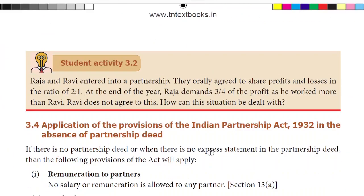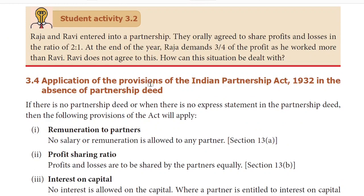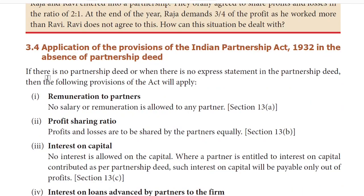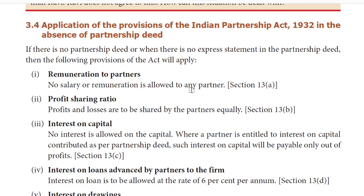Application of the provisions of the Indian Partnership Act 1932 in the absence of partnership deed. Partnership deed is an optional requirement, but it is mandatory to follow the Act if no deed exists. In case a partnership firm has no partnership deed, the Indian Partnership Act 1932 will apply. If there is no partnership deed or no express statement in the partnership deed, the following provisions of the Act will apply.